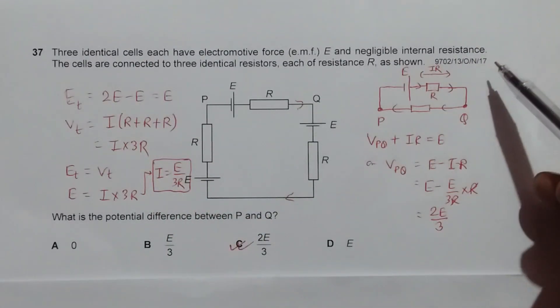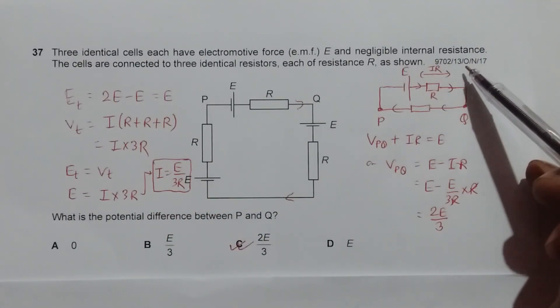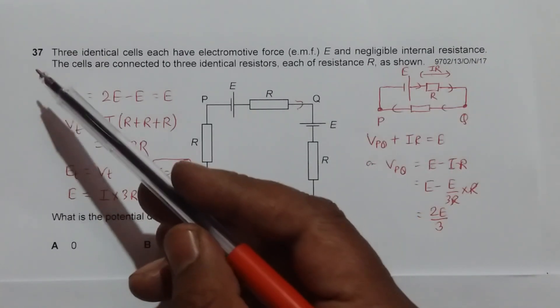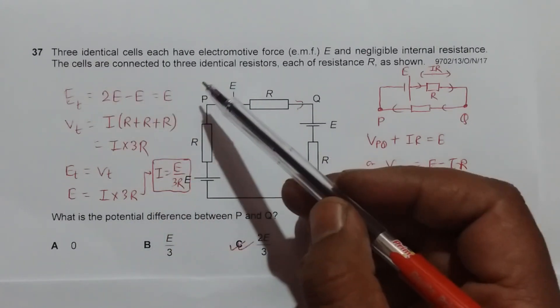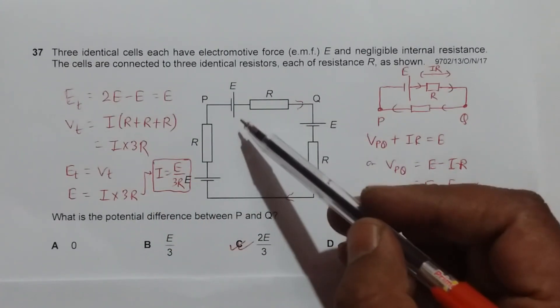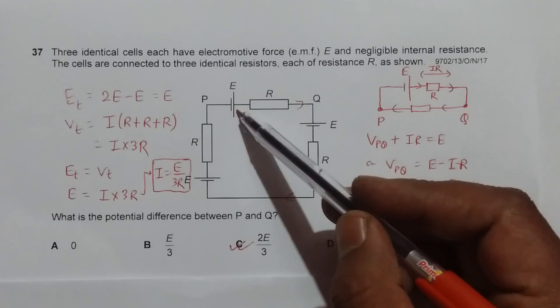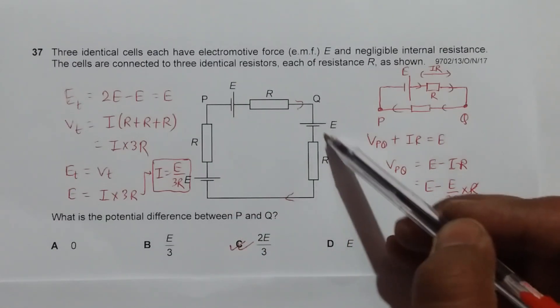This question is from 2017 October November paper 13, and the question number is 37. There are three identical cells - you can see from the diagram here, one cell is this, another is this, and another one is this.